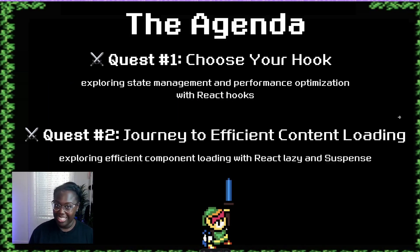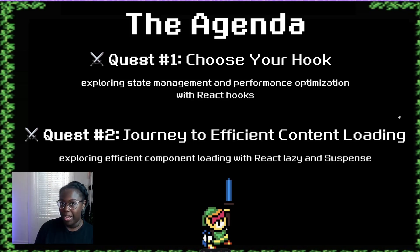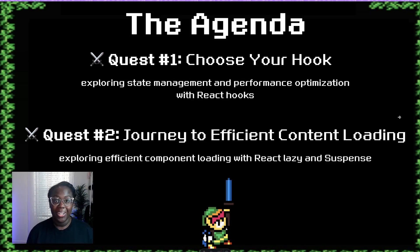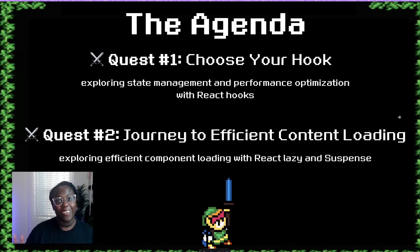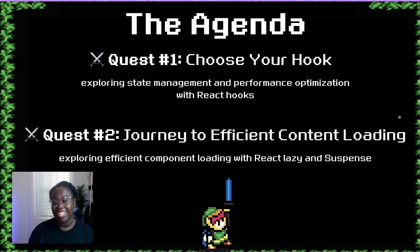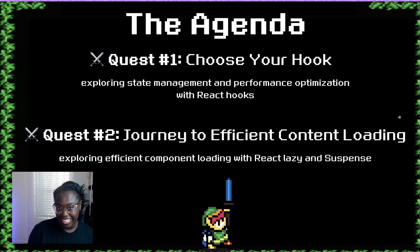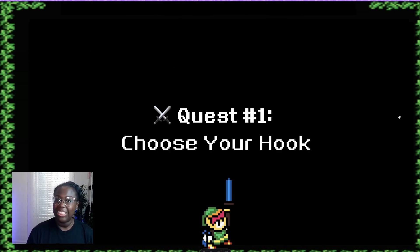Today we're going to embark on two main quests. The first one is "Choose Your Own Hook," where we will journey into state management and performance optimization techniques through built-in React hooks — covering useState, useReducer, useContext, useMemo, memo, and useCallback. Our second journey will explore dynamic content loading with React lazy and Suspense. Today's content is best suited towards engineers who are towards the beginning of their React journey, so you don't need to be a React expert to get something from this presentation.